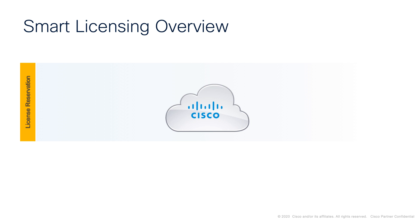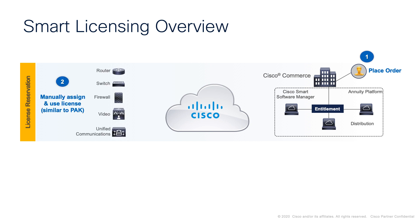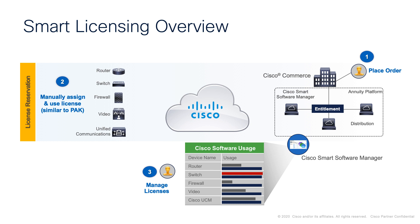The fourth option within smart licensing capabilities is to use something called license reservation. This is for environments where there are the strictest of controls in place or any form of automated communication is not possible. Here, licenses are purchased and assigned in the same way using your smart account, and then the process of actually applying the licenses to devices is manual. Approval is required to be obtained via your Cisco representative in order to use license reservation. Once your licenses have been applied, you are still able to manage them via your Cisco Smart Software Manager account. However, remember this is a manual process and there is no automation involved.